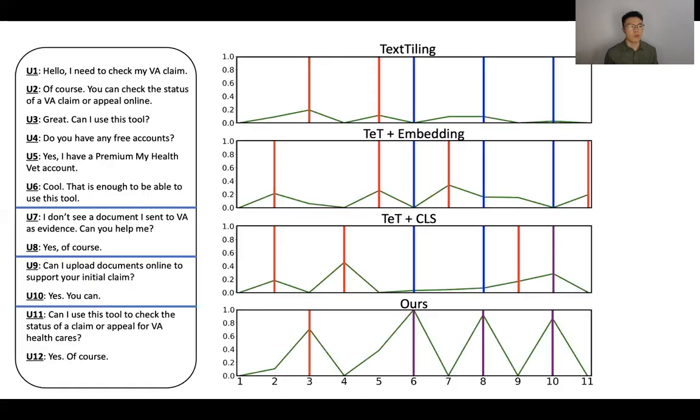We also study performance of baselines and our proposal on a particular case. We can observe that the text tiling segmenter enhanced by our coherent scoring model can achieve two advantages, which are producing more distinctive depth scores and having more accurate boundary prediction.